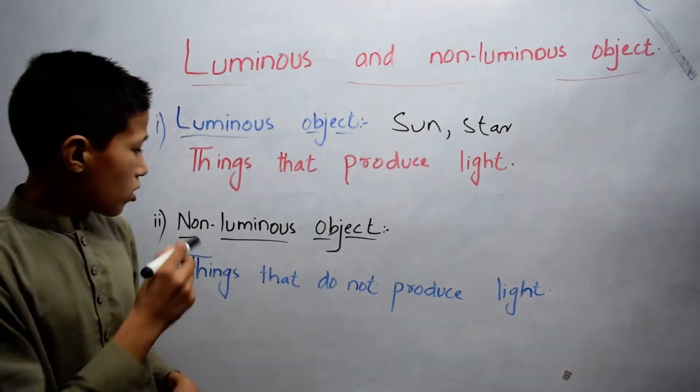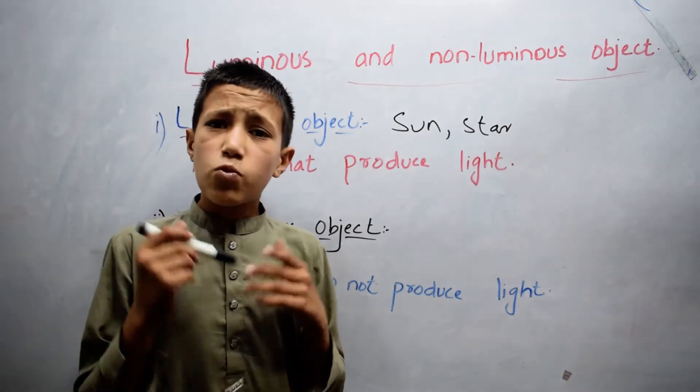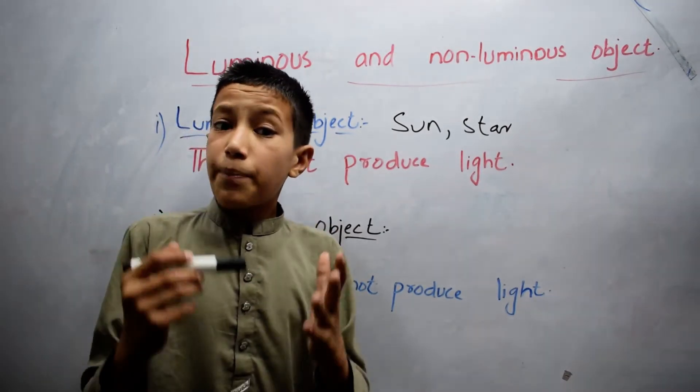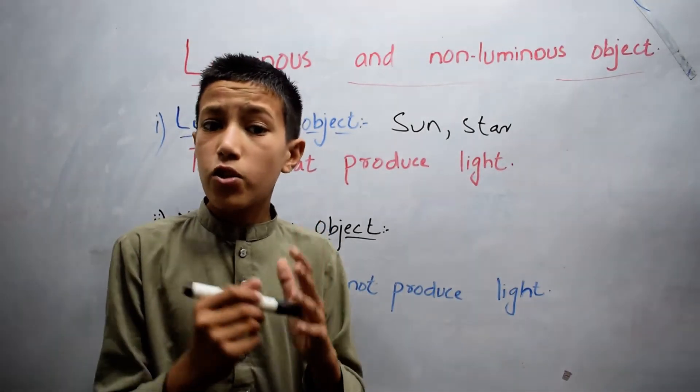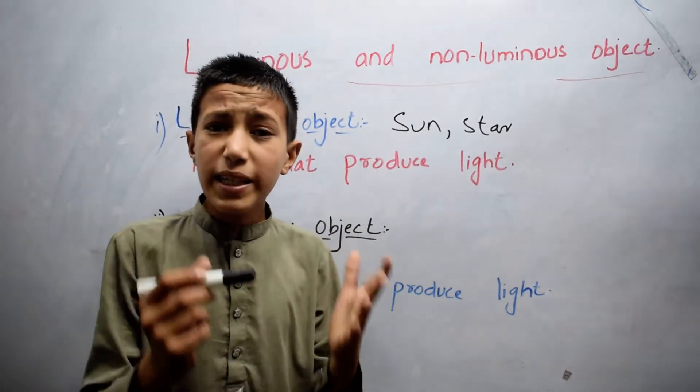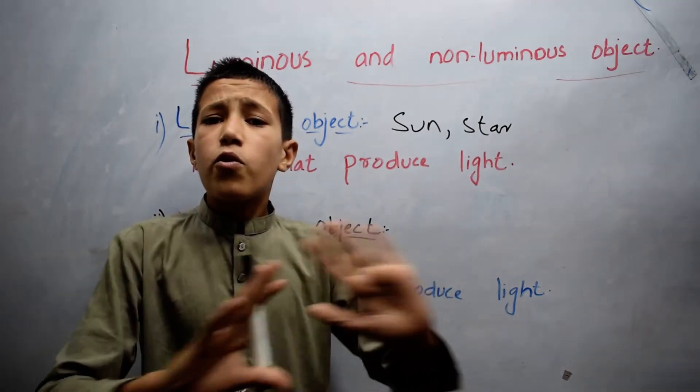Now let's come to non-luminous objects. Non-luminous objects are those that reflect some of the light which they receive from luminous objects. This means that non-luminous bodies have no light of their own.